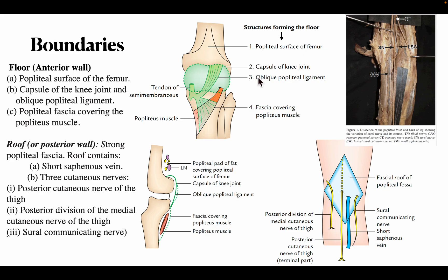The floor of the popliteal fossa is formed by the popliteal surface of the femur, the capsule of the knee joint, the oblique popliteal ligament of the knee joint, and the fascia covering the popliteus muscle. You can see the same structures forming the floor in the diagram.